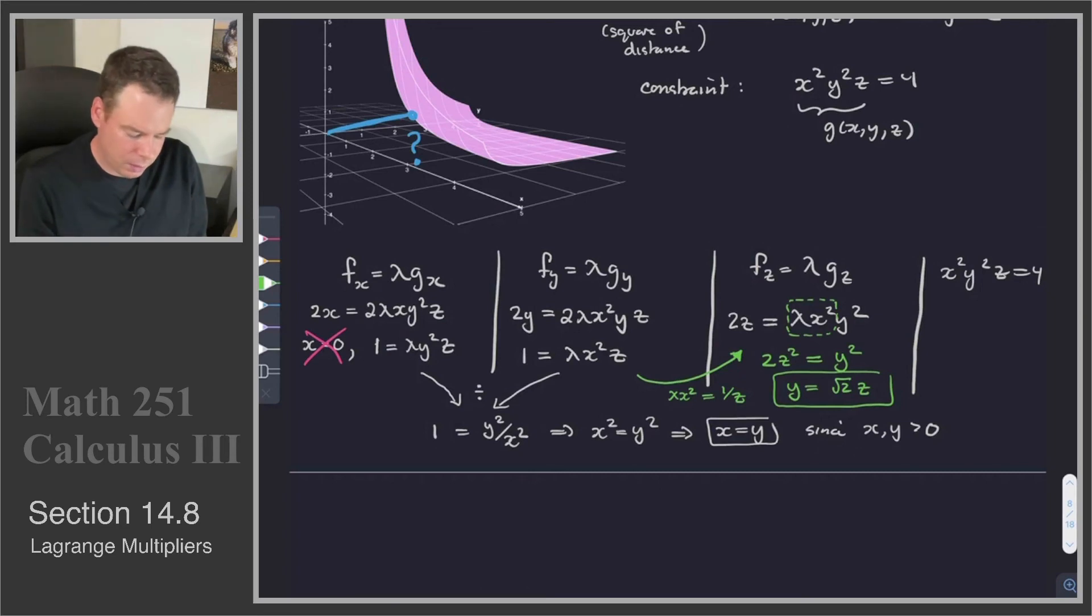And so that means that I can rewrite everything in terms of z. I can write, maybe I'll even do one more thing here. Since x is equal to y, and y is equal to root 2 z, x is also equal to root 2 z. And so that tells me I can take this equation, plug it in for x. I can take this expression, plug it in for y.